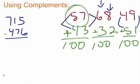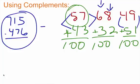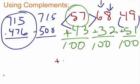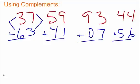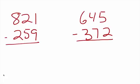Let's get back to this one. We're going to go up to the next multiple of 100, which is 500. How far did we go up from 76 to get to 500? 24. So let's put a little 24 right there. We have 7 minus 5 is 2. So we have 215 plus 24, and our answer will be 239. We see that?